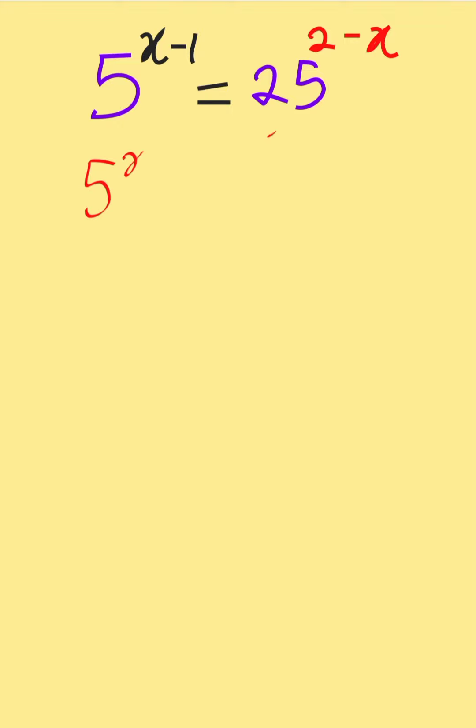So 5 to the power of x minus 1 is equal to 25 is 5 to the power of 2, then bracket 2 minus x. 5 to the power of x minus 1 is now equal to 5 to the power of 2 times 2 is 4, and 2 times minus x is minus 2x.